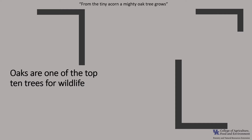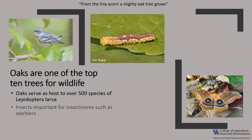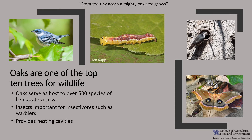From the tiny acorn a mighty oak tree grows, and according to the National Wildlife Federation, oaks are one of the top 10 trees for wildlife. Oaks serve as a host tree for more than 500 different lepidopteran larvae, including dagger moths and the giant silk moth that you see here in this photo. These larvae in turn feed seasonal migratory songbirds such as our warblers.